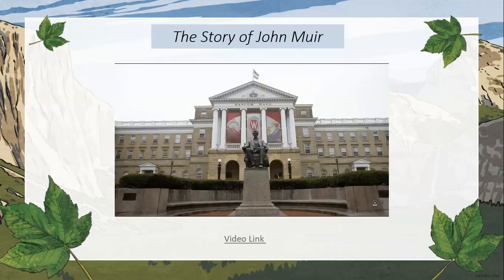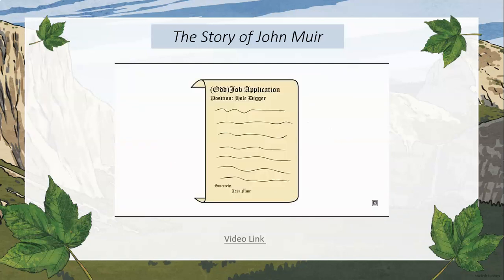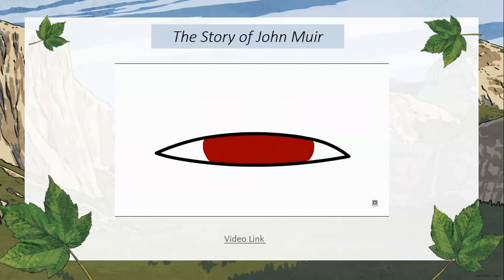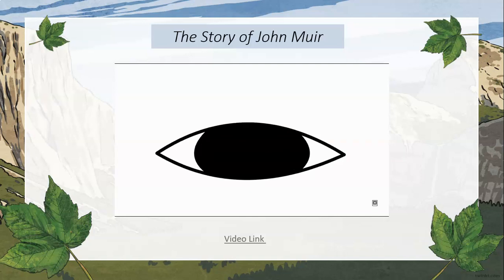During that year he also entered the University of Wisconsin. He was a good student, but he dropped out after only three years to travel to the northern United States and do many odd jobs throughout land less touched by civilization. In 1867, Muir had an eye injury that gave him wanderlust because he could not see for a month. But when his eye healed, he decided to look into the wilderness.